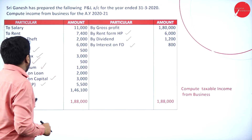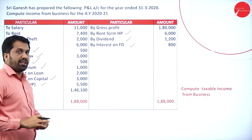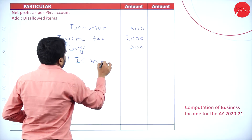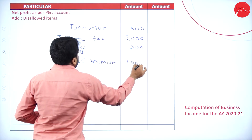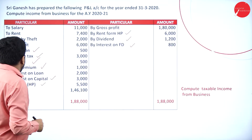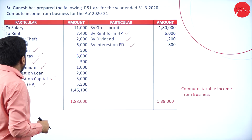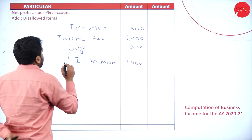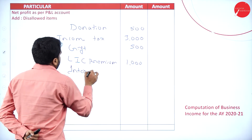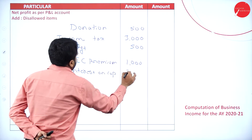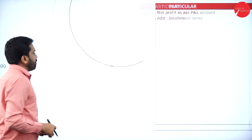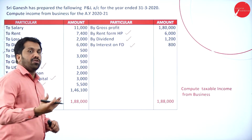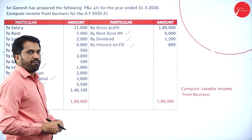LIC premium is 1,000 — added back. Interest on loan — we will not take. Interest on capital is 3,000 — added back. Repairs made for house property is 5,500 — also added back as it is not a business expense.